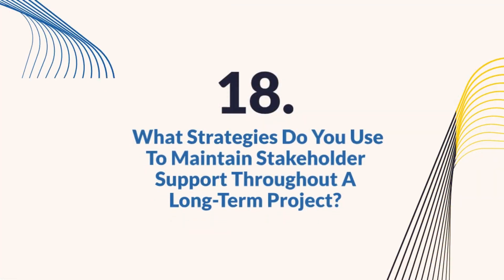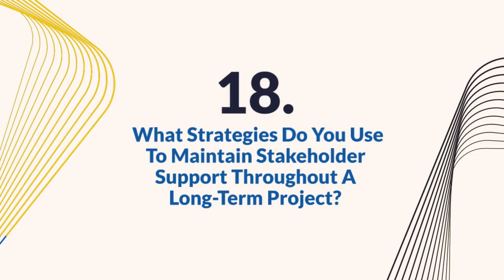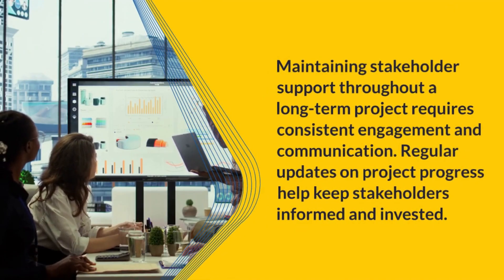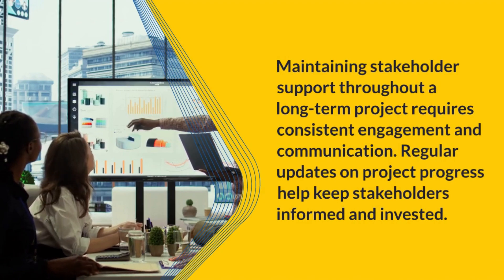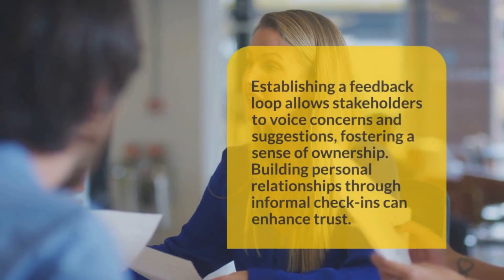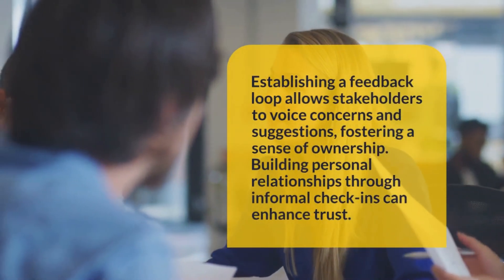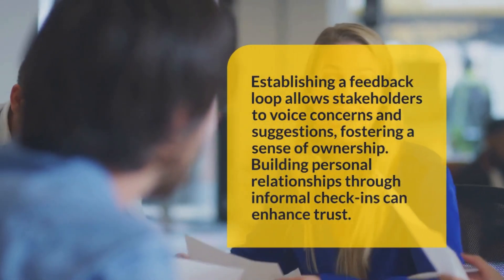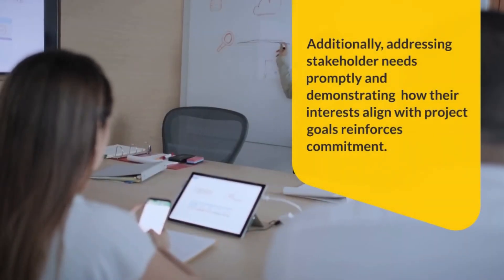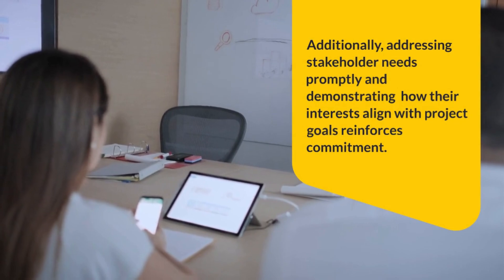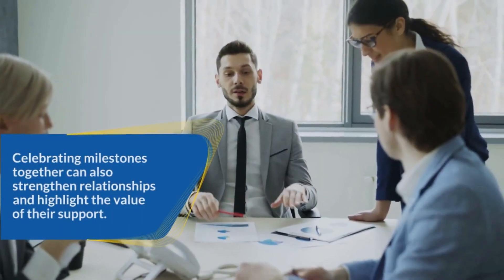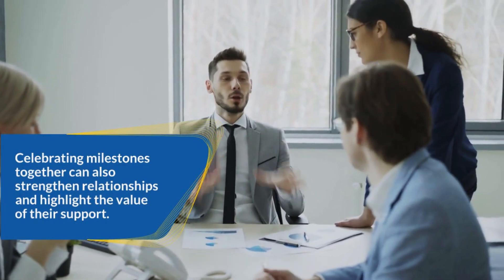Question 18: What strategies do you use to maintain stakeholder support throughout a long-term project? Maintaining stakeholder support throughout a long-term project requires consistent engagement and communication. Regular updates on project progress help keep stakeholders informed and invested. Establishing a feedback loop allows stakeholders to voice concerns and suggestions, fostering a sense of ownership. Building personal relationships through informal check-ins can enhance trust. Additionally, addressing stakeholder needs promptly and demonstrating how their interests align with project goals reinforces commitment. Celebrating milestones together can also strengthen relationships and highlight the value of their support.